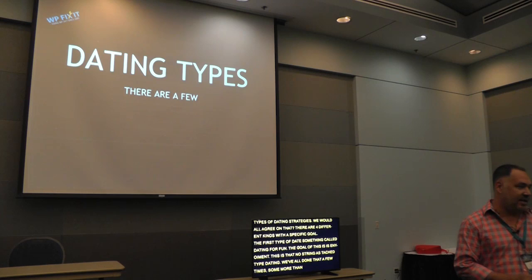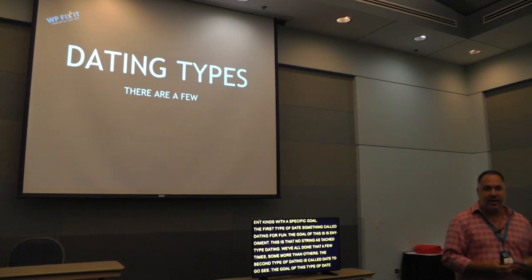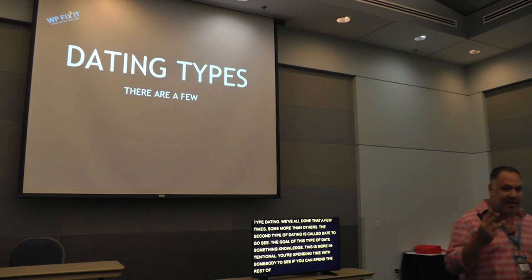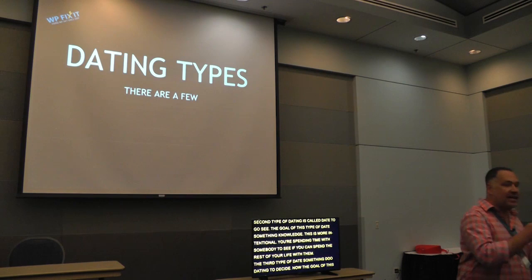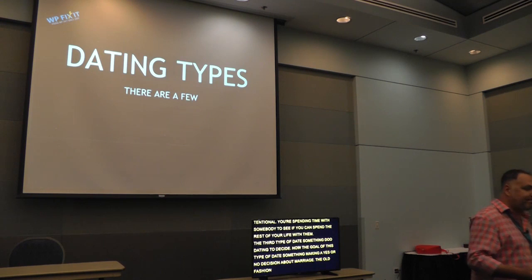The second type of dating is called dating to see. The goal of this type of dating is knowledge. This is a bit more intentional — you're spending time with somebody to see if you can spend the rest of your life with them. The third type of dating is dating to decide, and the goal is making a yes or no decision about marriage. The old-fashioned term for this is courtship.